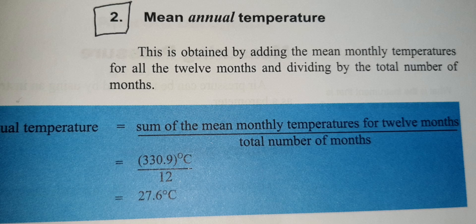However, for the mean annual temperature, here is another formula: the sum of mean monthly temperatures for 12 months divided by the total number of months. So we have 330.9 degrees Celsius divided by 12, which gives us 27.6 degrees Celsius.